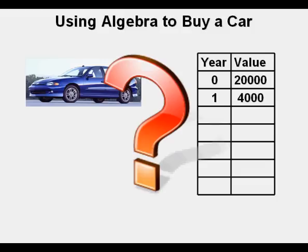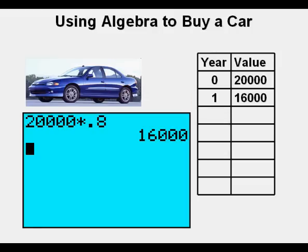After one year and a 20% depreciation rate, will the value of the car be .2 times $20,000 or $4,000? No, because 20% off means the price will be 100% minus 20% or 80% of the price of the car at year zero. And since 20,000 times 80% is $16,000, the price of the car or value of it will be $16,000 after one year.